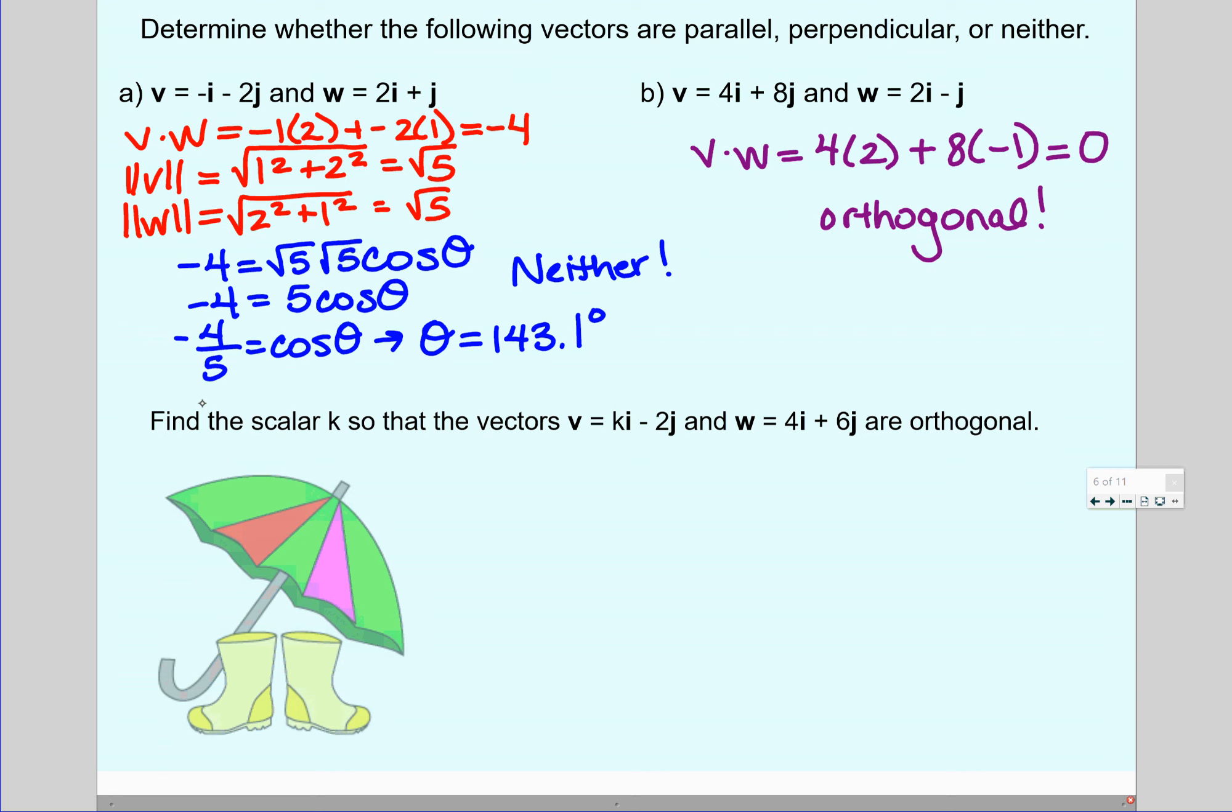Parallel vectors had an angle of 0 or 180 between them. Perpendicular, orthogonal is the word we use, had an angle of either 90 or 270, but it also had a special property that the dot product equals 0.